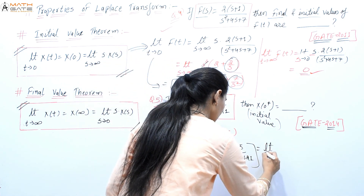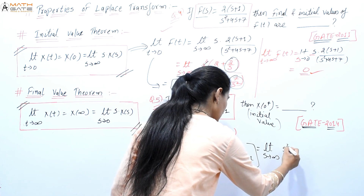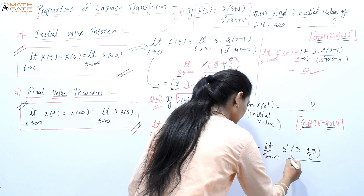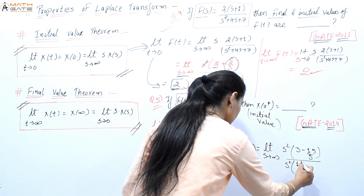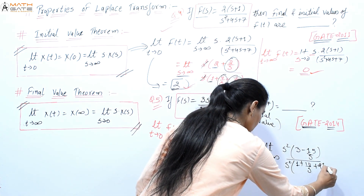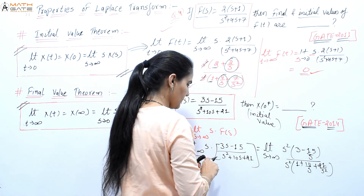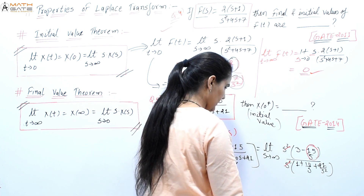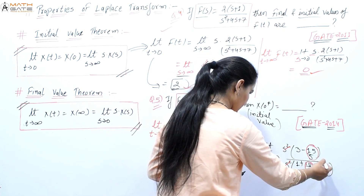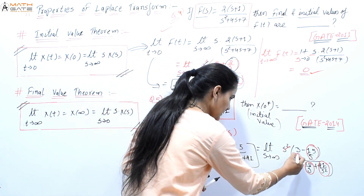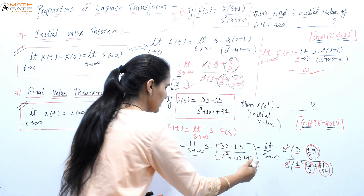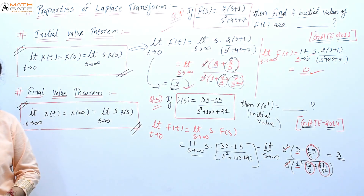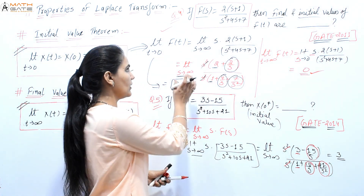Taking s² common, this becomes limit s→∞ of s² · (3 − 15/s) / [s²·(1 + 10/s + 21/s²)]. The s² cancels. Applying limit s→∞, all terms 15/s, 10/s, and 21/s² go to zero, leaving 3/1 = 3. So the initial value for this question is 3. Both initial and final value theorems have been applied.